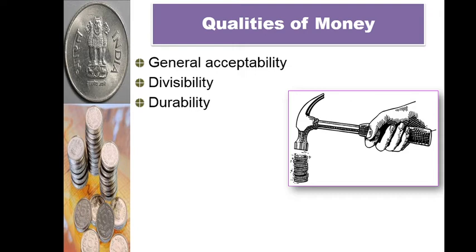If you want to make a payment in future — for example, if you borrow money from someone and want to pay back the same nature, same quality, same quantity with interest and principal amount in future — then money must be durable in nature to pay that amount. That is, payment of deferred payments can also be made with the help of money. That's why money must be durable in nature.